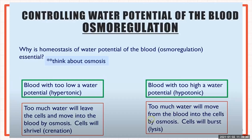Let's talk about why homeostasis of water potential of blood — or osmoregulation — is important. Think about the process of osmosis. We can have a condition where blood has a very low water potential, meaning the blood is hypertonic with more solutes. Alternatively, blood can have too high a water potential, meaning it is hypotonic, where the concentration of water compared to solutes is greater.